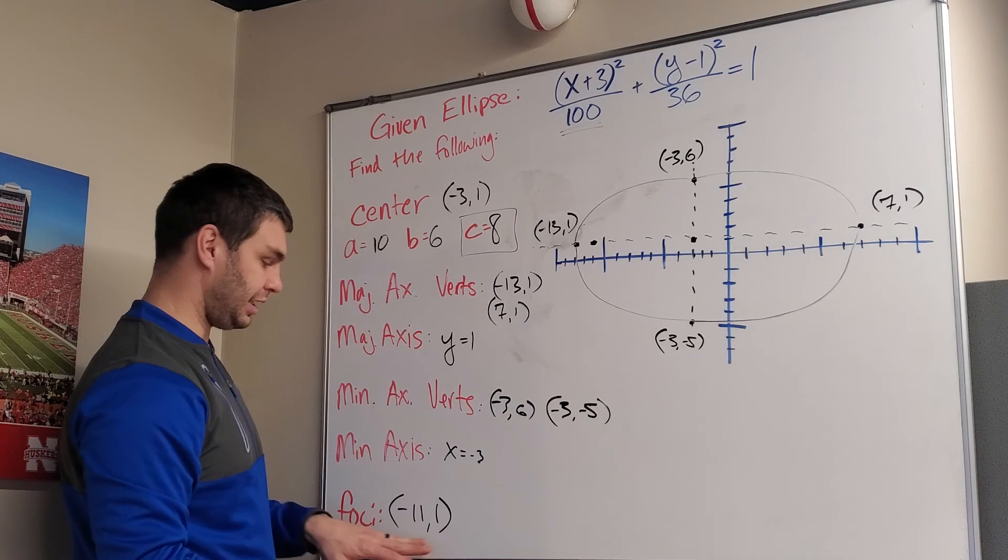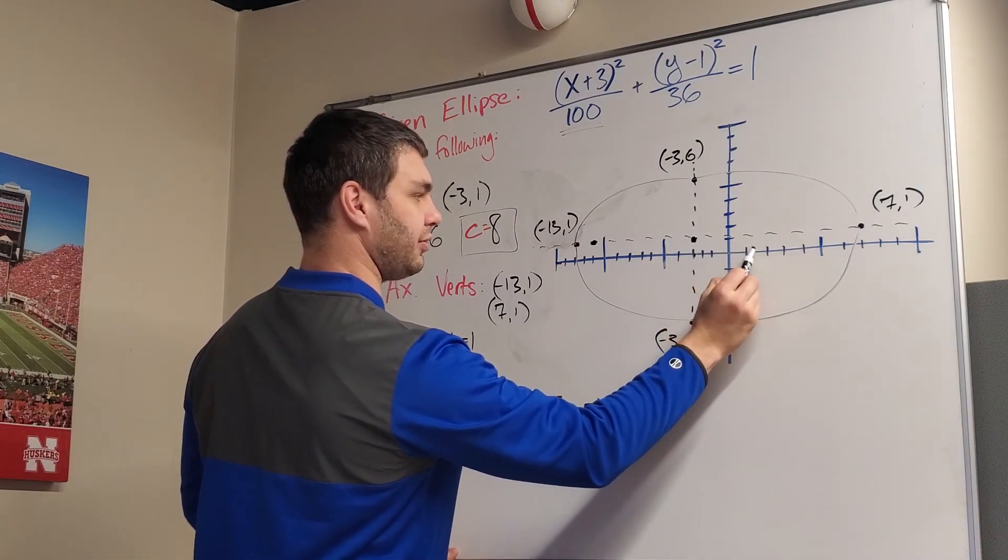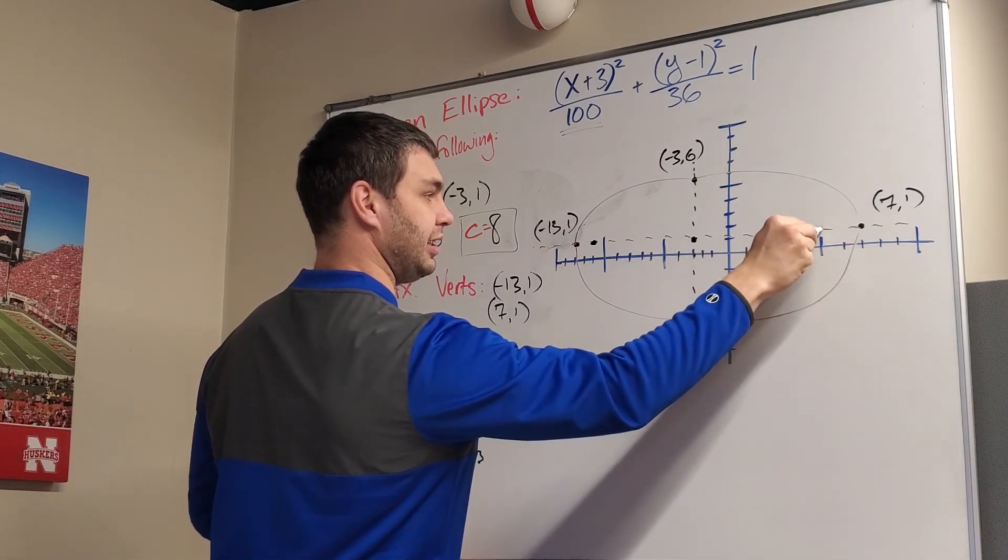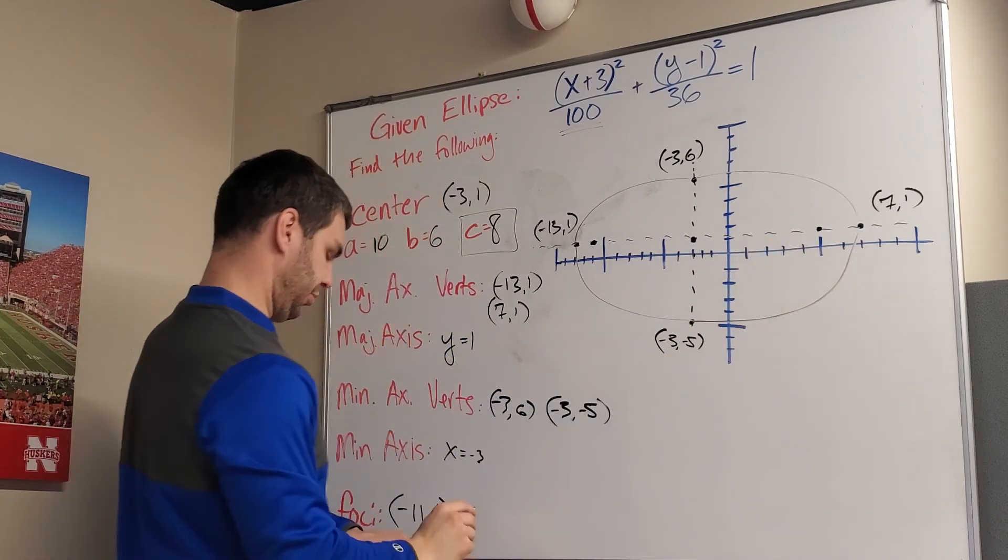And the other one is 1, 2, 3, 4, 5, 6, 7, 8 right here. And that's 5, 1, 0.51.